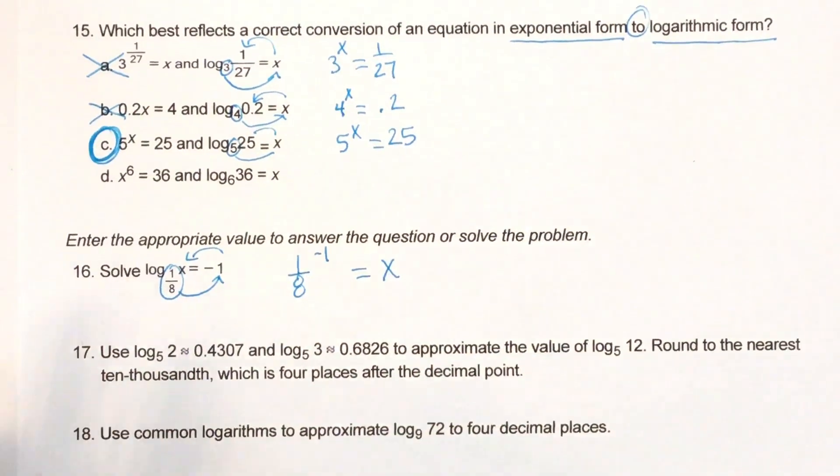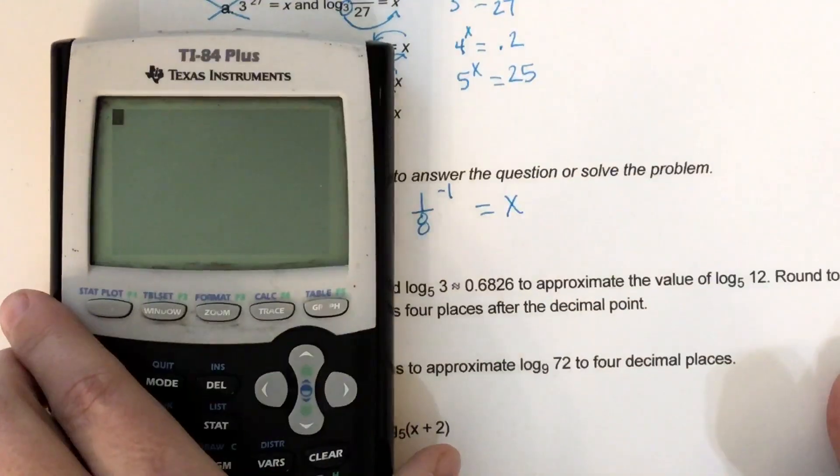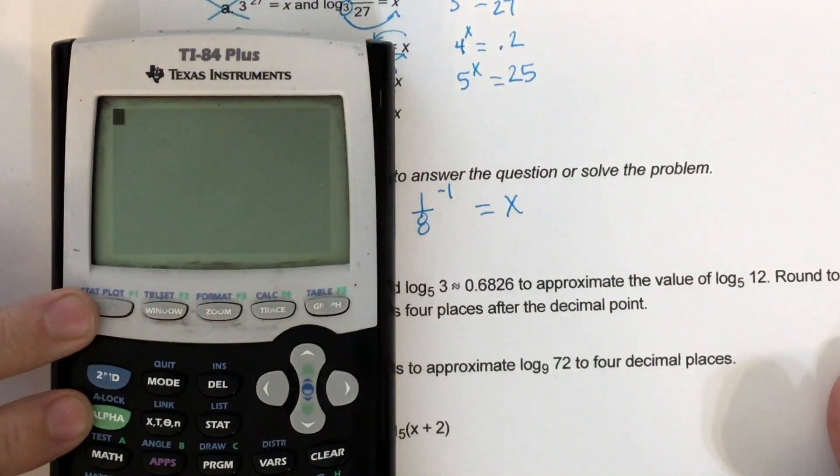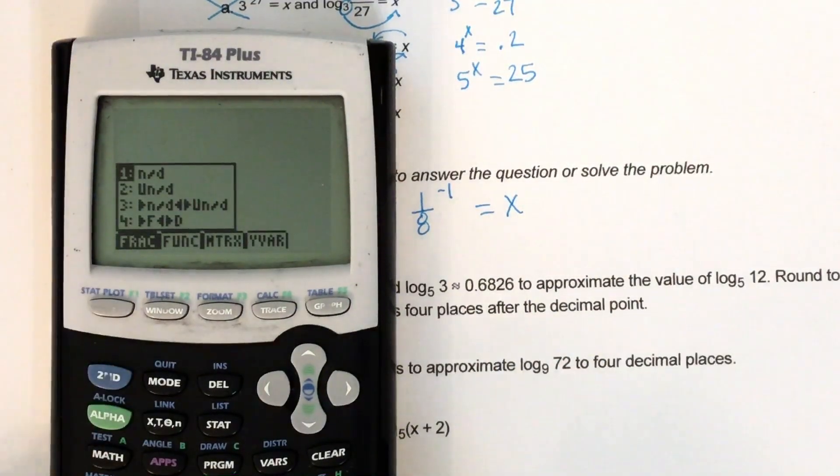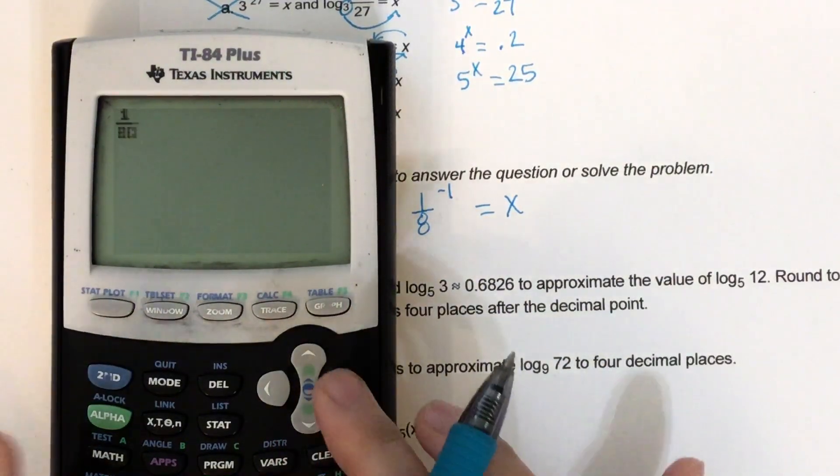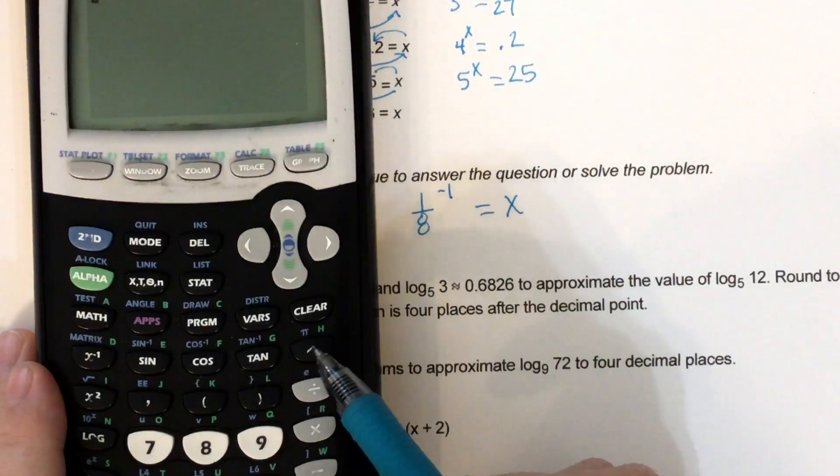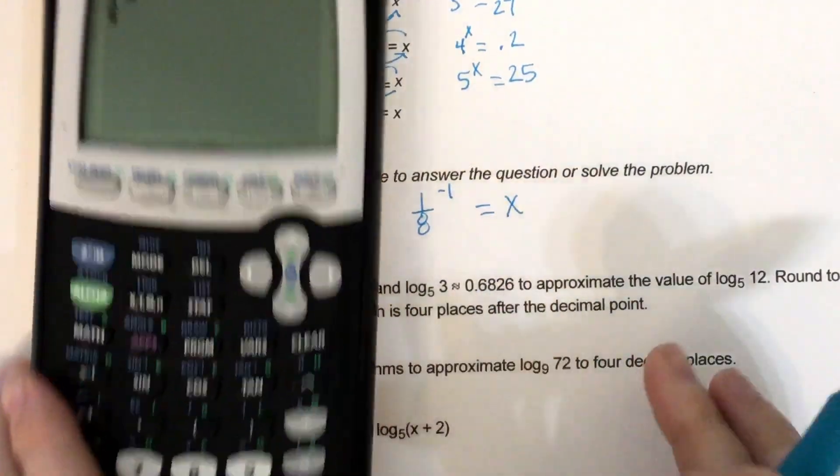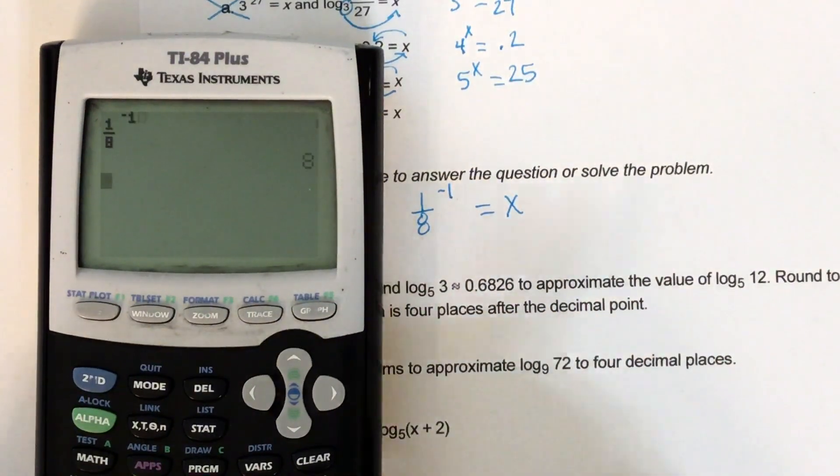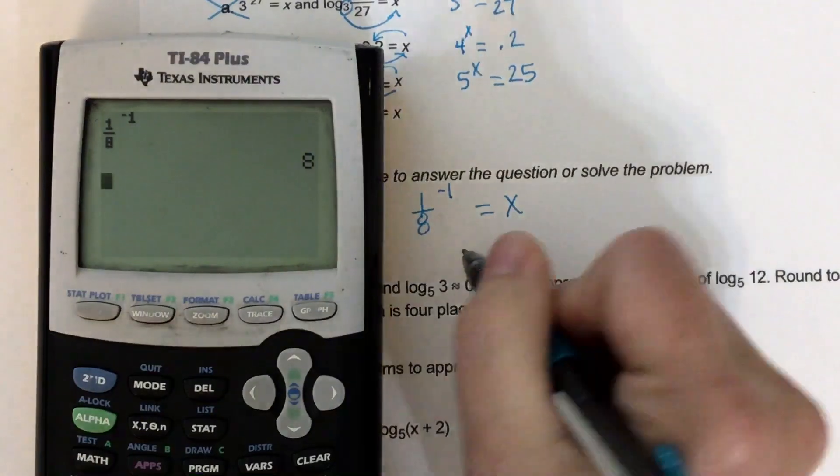And I can just put that in my calculator, 1 eighth to the negative 1 power. So I'm going to go ahead and do alpha y equals, enter, 1 on top, 8 on bottom, and I raise it to the negative 1. And that is 8. So 8 is my answer.